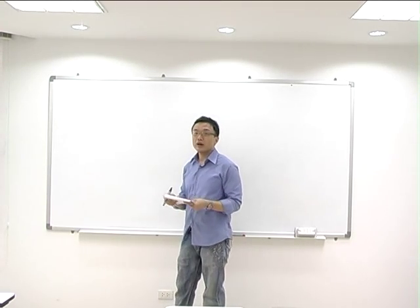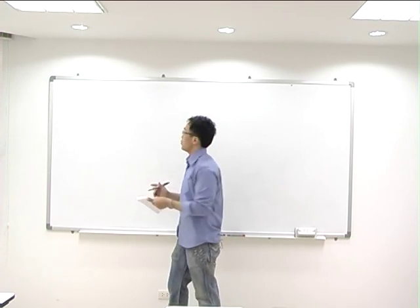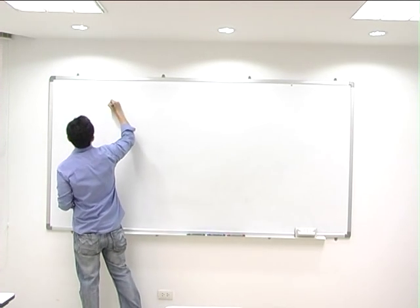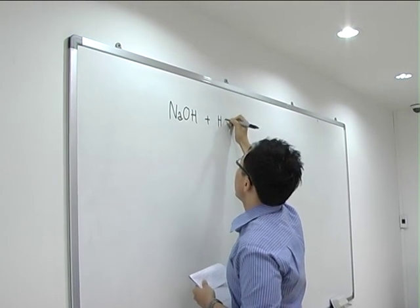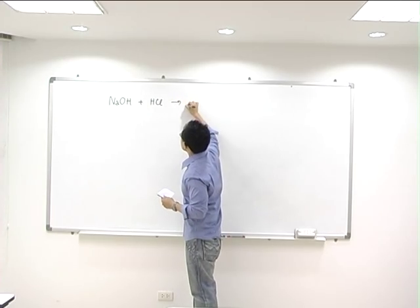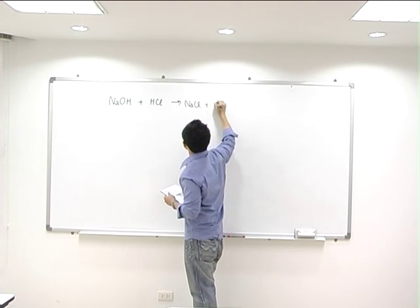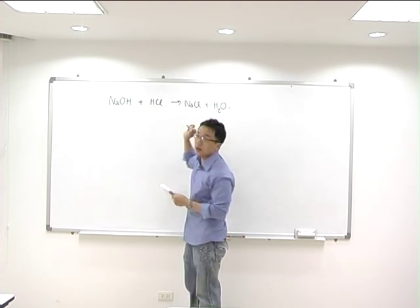Let's look at an acid and base reaction. If we have sodium hydroxide react with hydrochloric acid, this will give sodium chloride and water. You know this reaction already because it's a simple reaction.